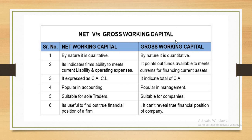There are two types: net working capital and gross working capital. Net working capital is qualitative in nature; gross working capital is quantitative in nature. Net working capital indicates the ability to meet current liabilities and operating expenses. Gross working capital is available for financing current assets and is expressed as CA minus CL. Net working capital is expressed as CA minus CL, and gross working capital is expressed as CA.